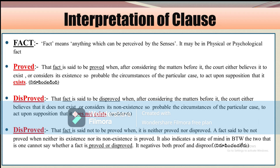Not proved negatives both proof and disproof. So the four key terms under Section 3 are: fact, proved, disproved, and not proved. Please be aware of these terms.